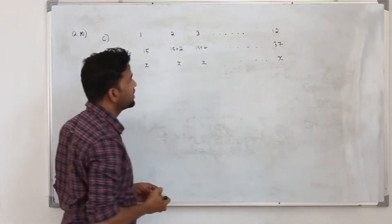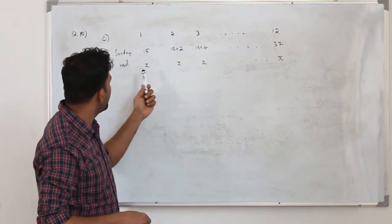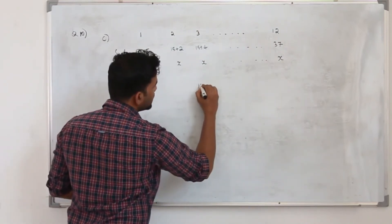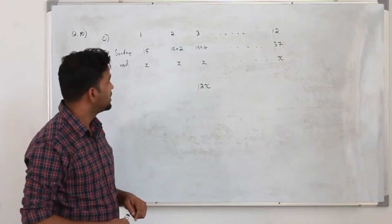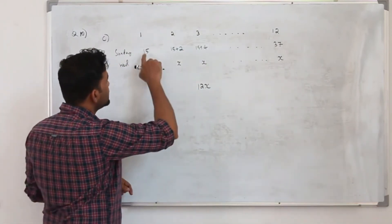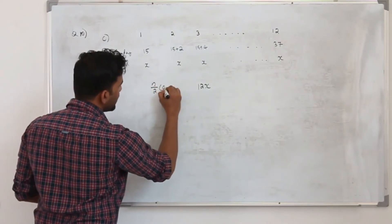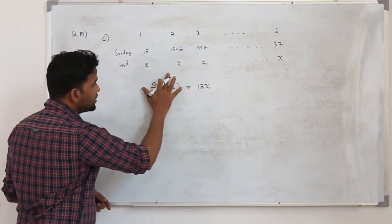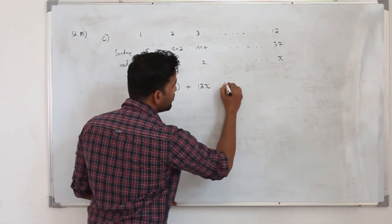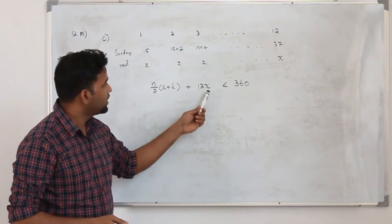He covers 37 km in week 12 on Sundays. He runs Sunday, Wednesday, Sunday, Wednesday, covering x km every Wednesday. For 12 weeks, he covers 12x km on Wednesdays. For Sundays, we need the sum of all 12 terms of the arithmetic sequence using the formula N/2 times (A plus L). The Sunday total plus the Wednesday total must not exceed 360 km.